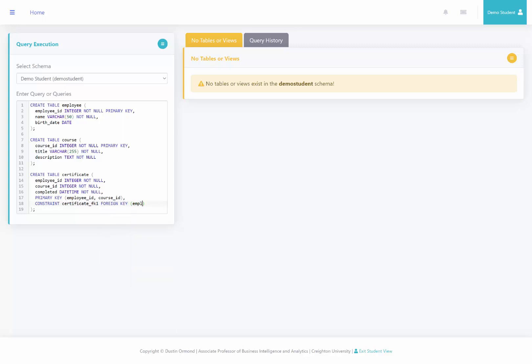And the column of the foreign key is going to be employee ID. And this employee ID is going to reference the employee table, specifically the employee ID in the employee table.